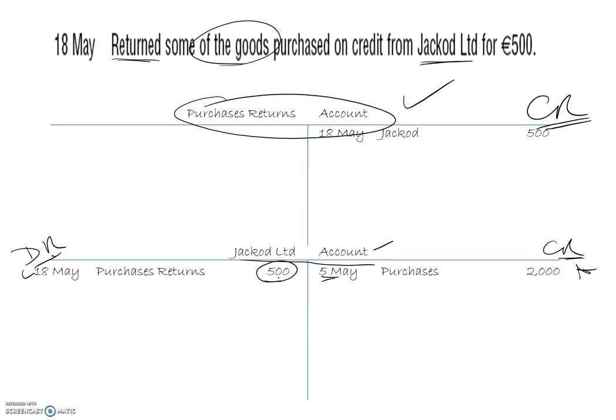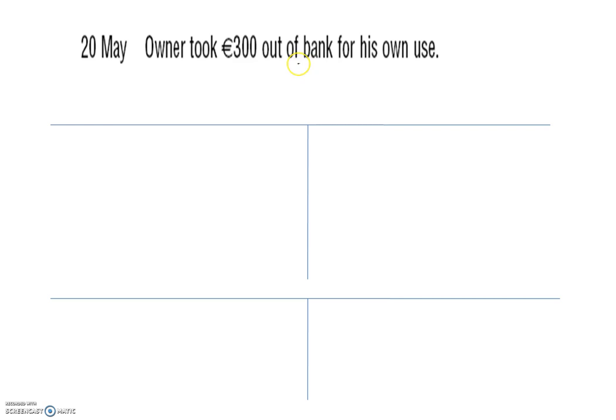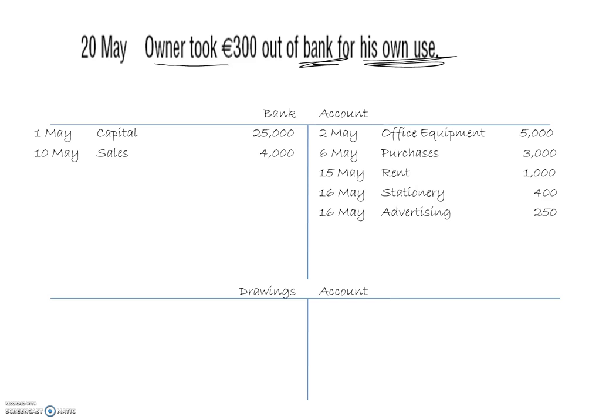20th of May: owner took 300 out of the bank for his own use. The owner taking money out of a business for personal use is referred to as drawings, so we need a drawings account. Money coming out is always on the credit side, so we credit the bank and debit the drawings account.